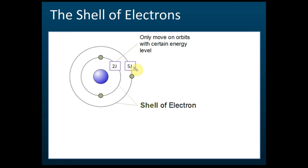Every shell has certain energy levels, and the further the shell is from the nucleus, the higher the energy level. The shell closer to the nucleus has two joules, and the shell further away has five joules — the further from the nucleus, the higher the energy.